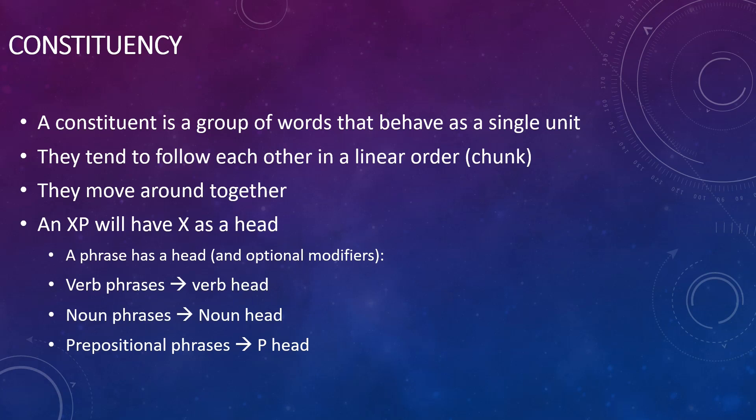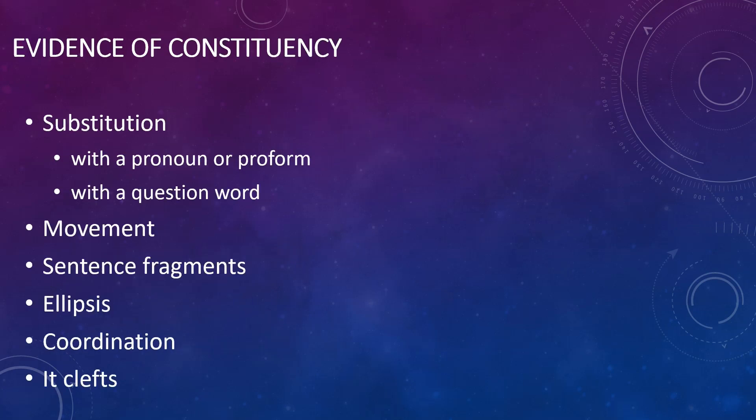In other words, verb phrases behave a little bit like verbs, noun phrases behave a little bit like nouns, prepositional phrases behave a little bit like prepositions, etc. There is a wide variety of evidence for constituency. It tends to be language specific and depends on the rules of that particular language. Here are a few that we'll be doing in this lecture relating to English.